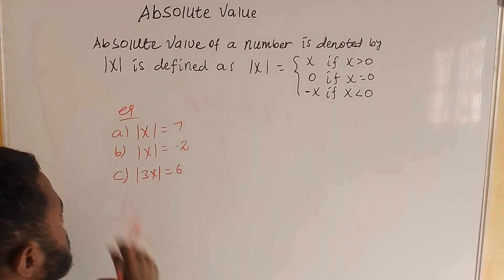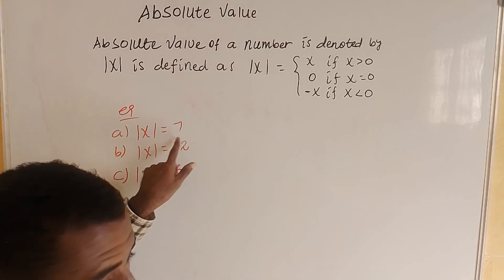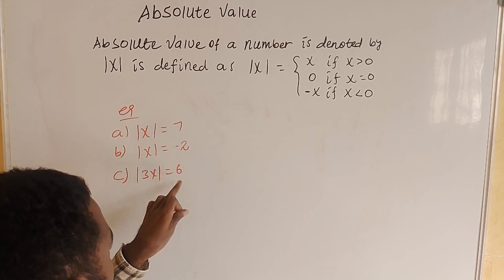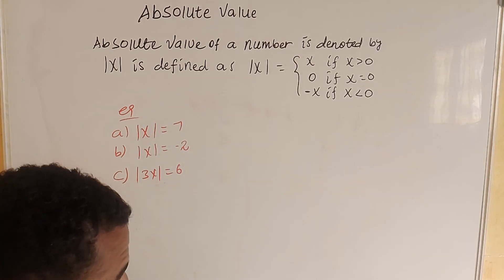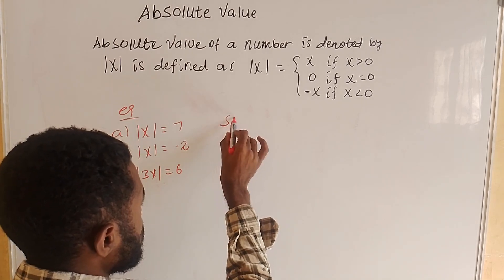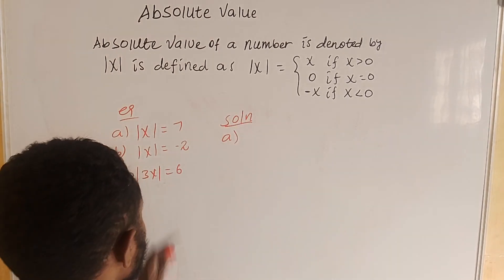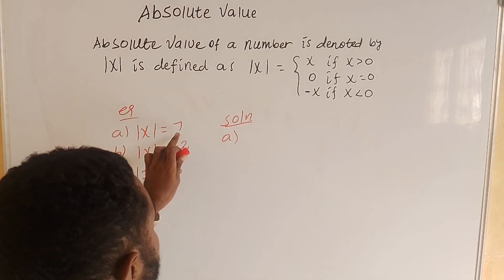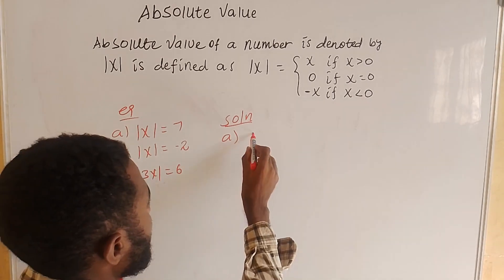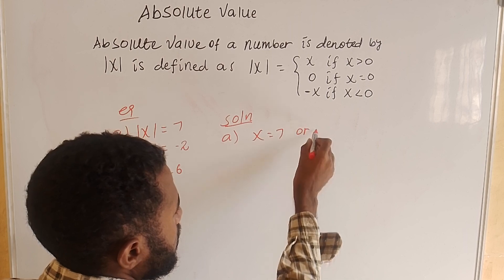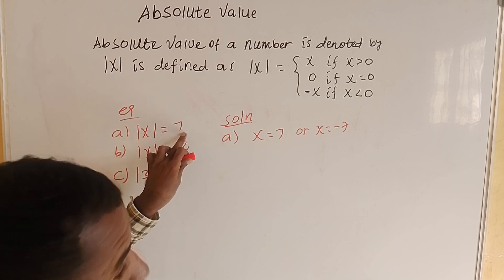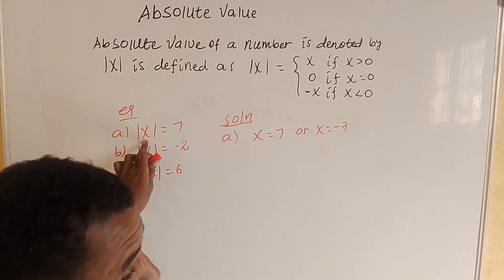Example: (a) absolute value of x equals 7, (b) absolute value of x equals negative 2, (c) absolute value of 3x equals 6. For (a): since 7 is positive, we have either x equals 7 or x equals negative 7. Checking x equals 7, the absolute value of x equals 7. ✓